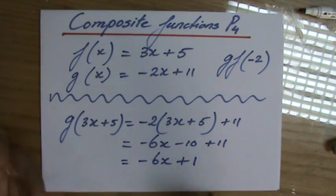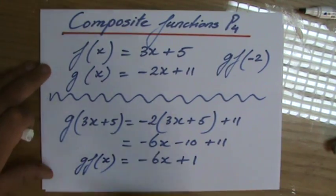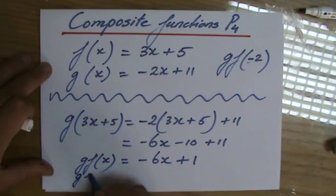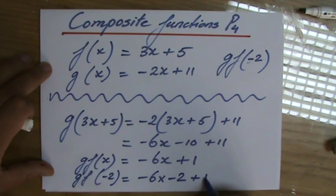Okay, so now I've found the composite function, if you like, of g(f(x)). And then they ask me to evaluate that for x minus 2, g(f(-2)). So it's minus 6 times x, so times minus 2 plus 1.